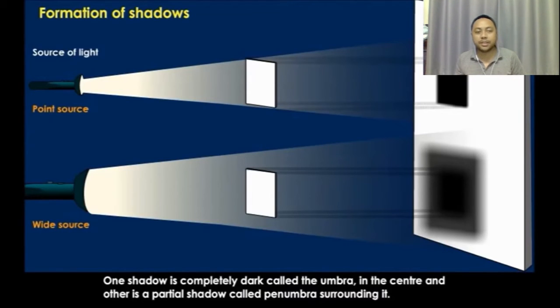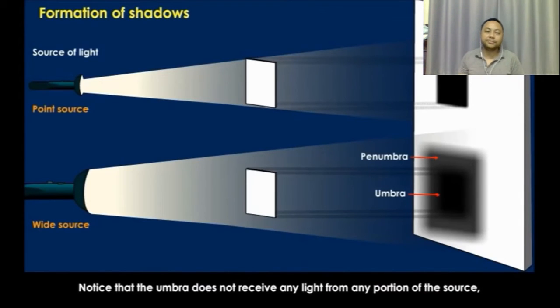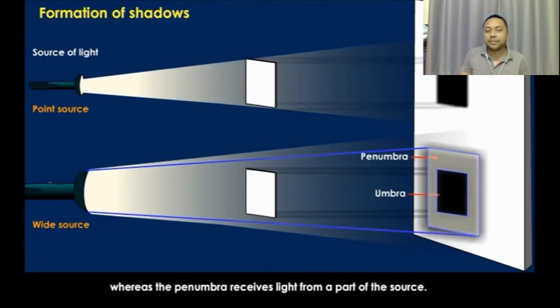One shadow is completely dark, called the umbra in the center, and the other is a partial shadow called penumbra surrounding it. Notice that the umbra does not receive any light from any portion of the source, whereas the penumbra receives light from a part of the source.